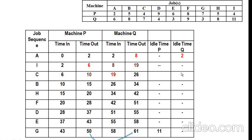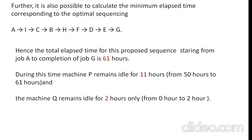There is no idle time for machine Q from the second sequence to the last sequence. But for the first task A, there is an idle time of 2 hours, from 0 to 2 hours. So the idle time for machine Q is 2 hours. Finally, the total elapsed time for the given job sequence is 61 hours, and the idle time for machine Q is 2 hours. The optimal sequencing order is: A, I, C, B, H, F, D, E, G. This is the optimal sequencing order with a total elapsed time of 61 hours. Thank you for watching the video.